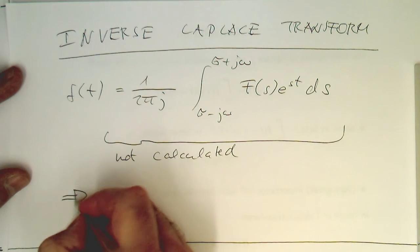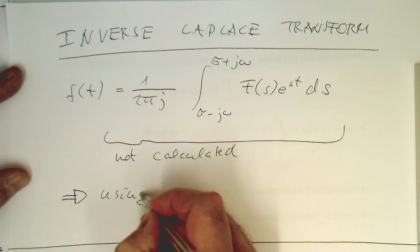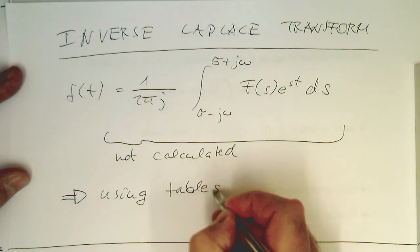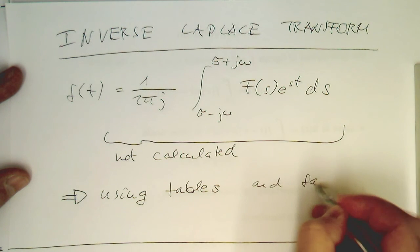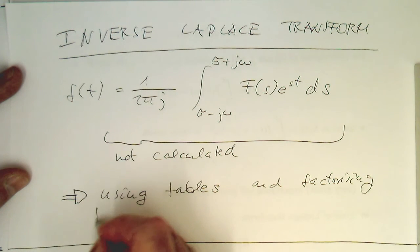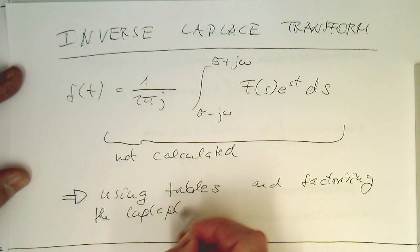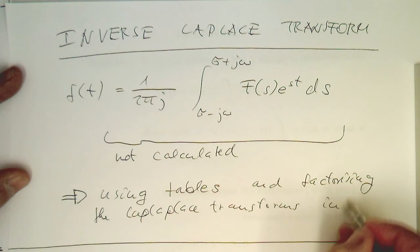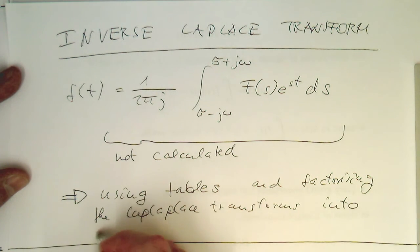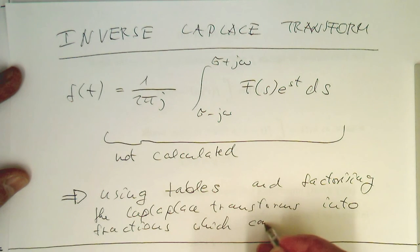The standard way of doing the inverse is using tables — tables which depict on one side the Laplace transform and then the time domain representation. The approach involves using tables and factorizing the Laplace transforms into fractions which can be looked up.